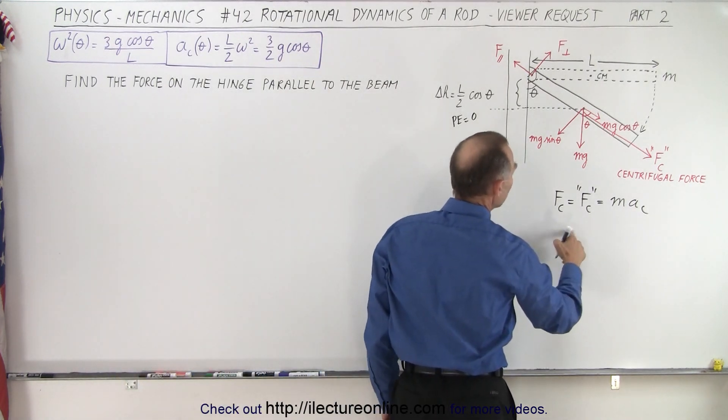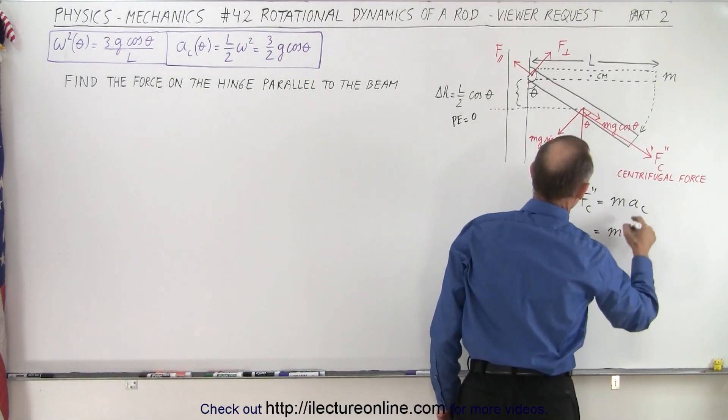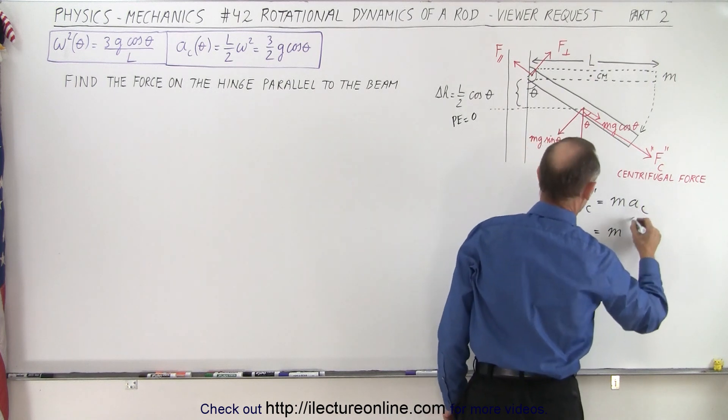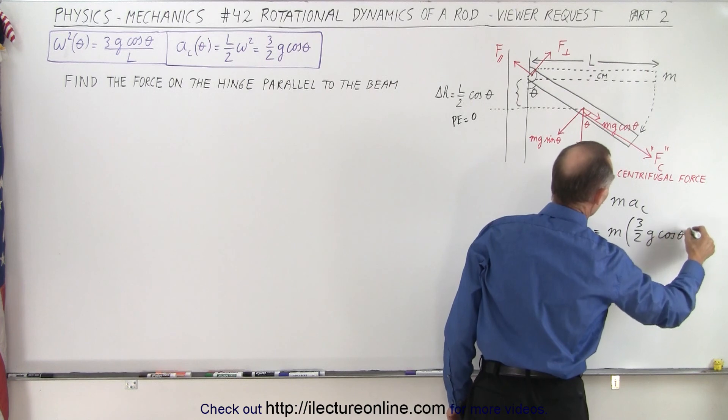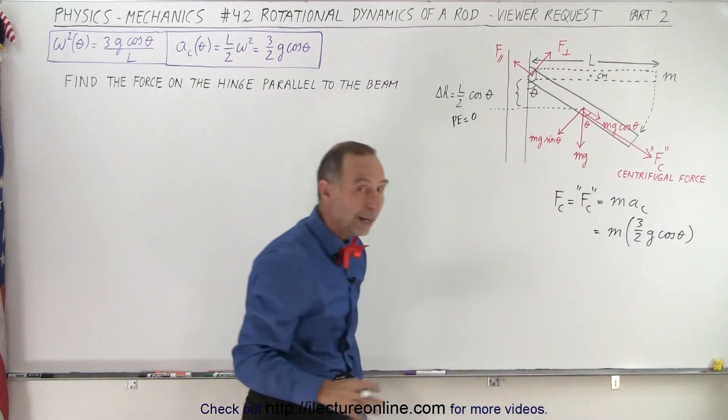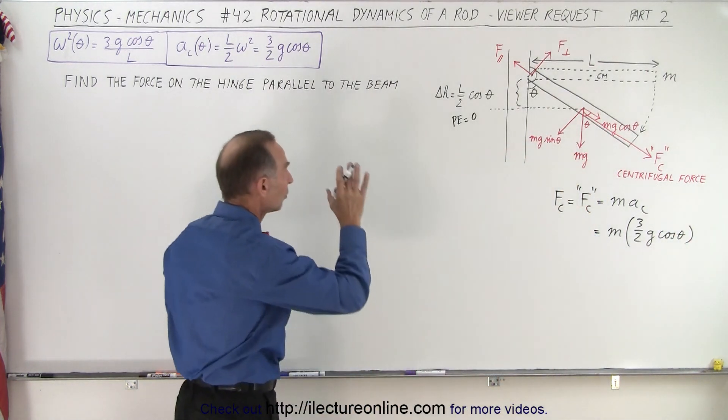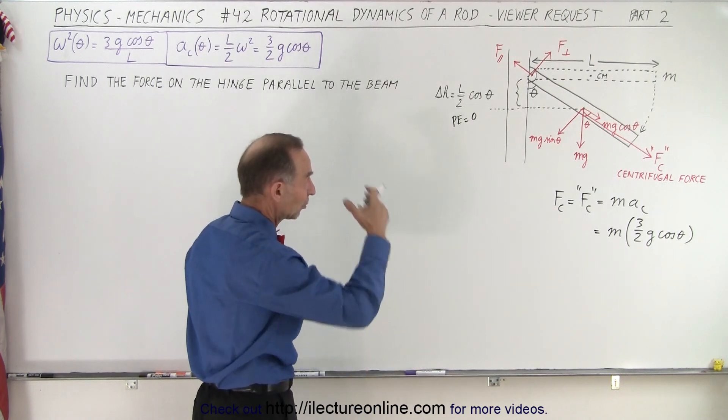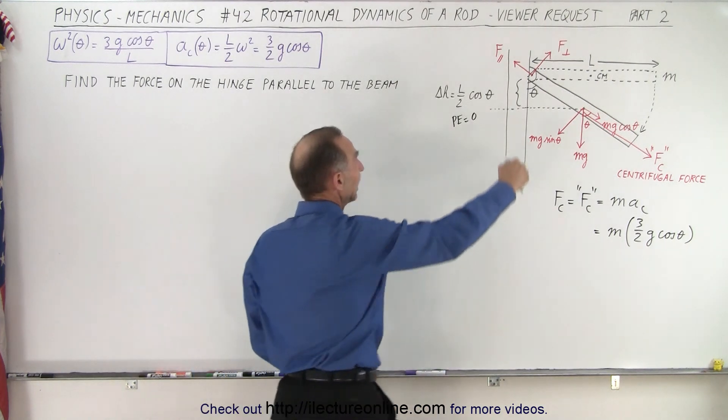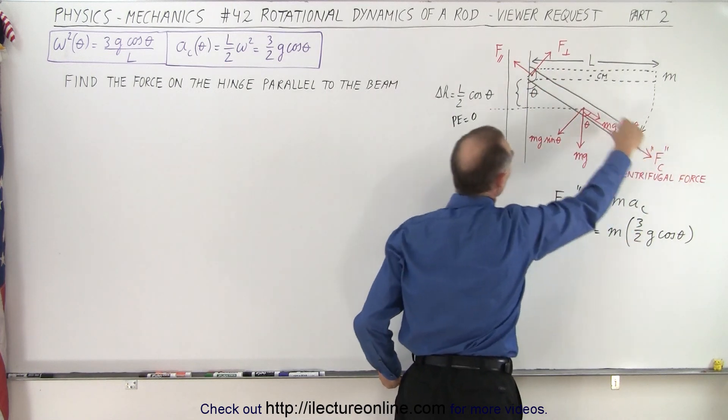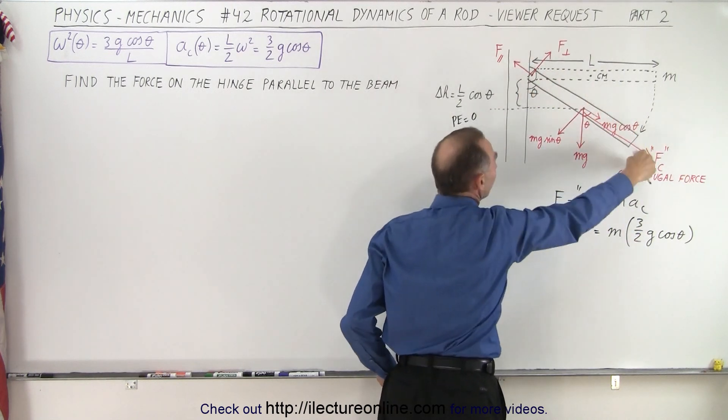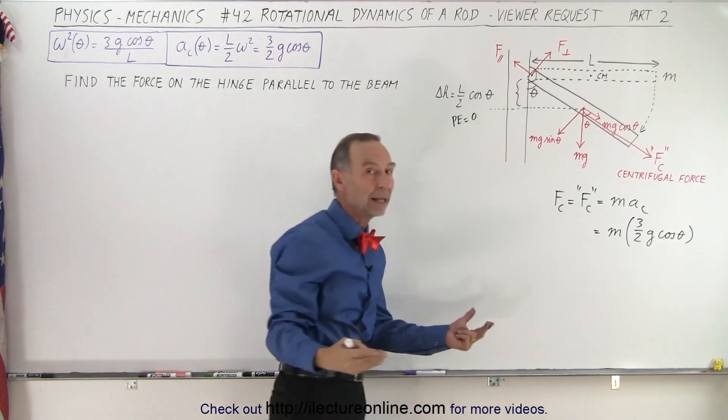So now what we can do is say that this is equal to the mass times the centripetal acceleration, which is 3 over 2 g cosine of theta. So now we're ready to calculate the force on the hinge parallel to the beam because we know that in this direction, since the beam doesn't move away from the pin or towards the pin in this direction, the forces must be balanced.